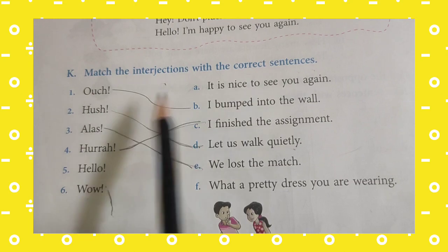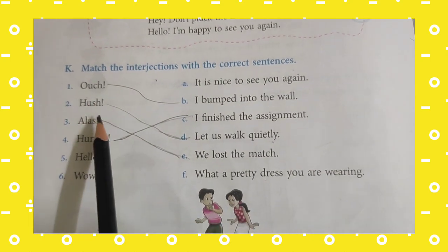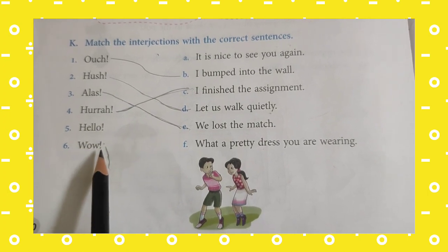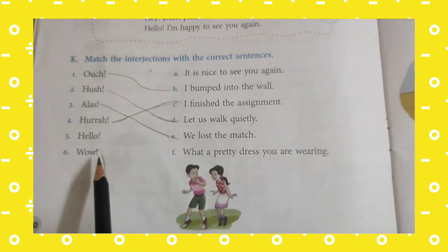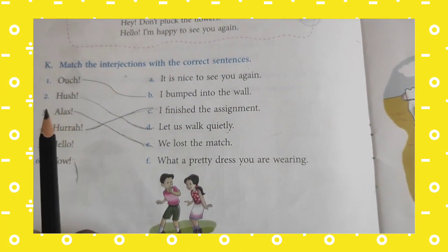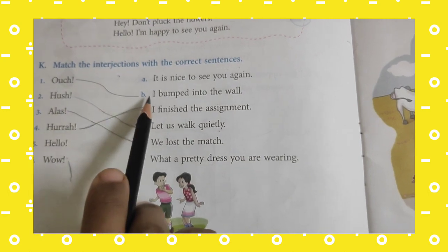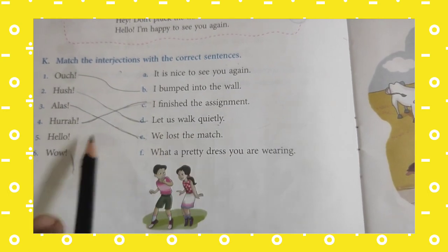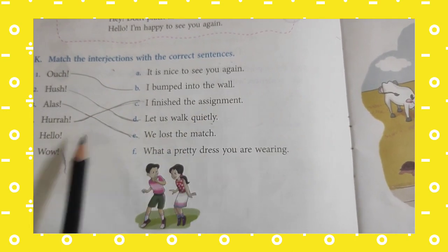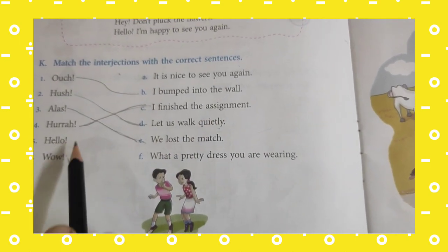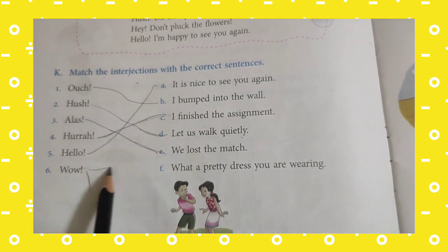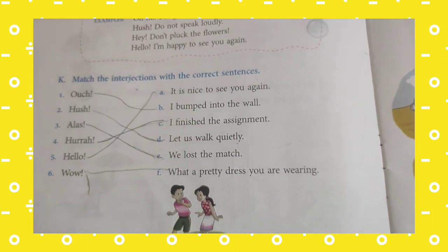Match the interjections with the correct sentences. Ouch! — I bumped into the wall. Hush! — Let's walk quietly. Alas! — We lost the match. Hooray! — I finished the assignment. Hello! — It's nice to see you again. Wow! — What a pretty dress you are wearing.